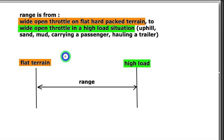So the range is from flat terrain, hard packed, without a passenger, whether it's a street bike or a dirt bike to a high load situation. The question for you is what's a typical high load situation? And have you tried different main jets during that high load situation to find out which one is the best? Or did you only test on flat terrain?